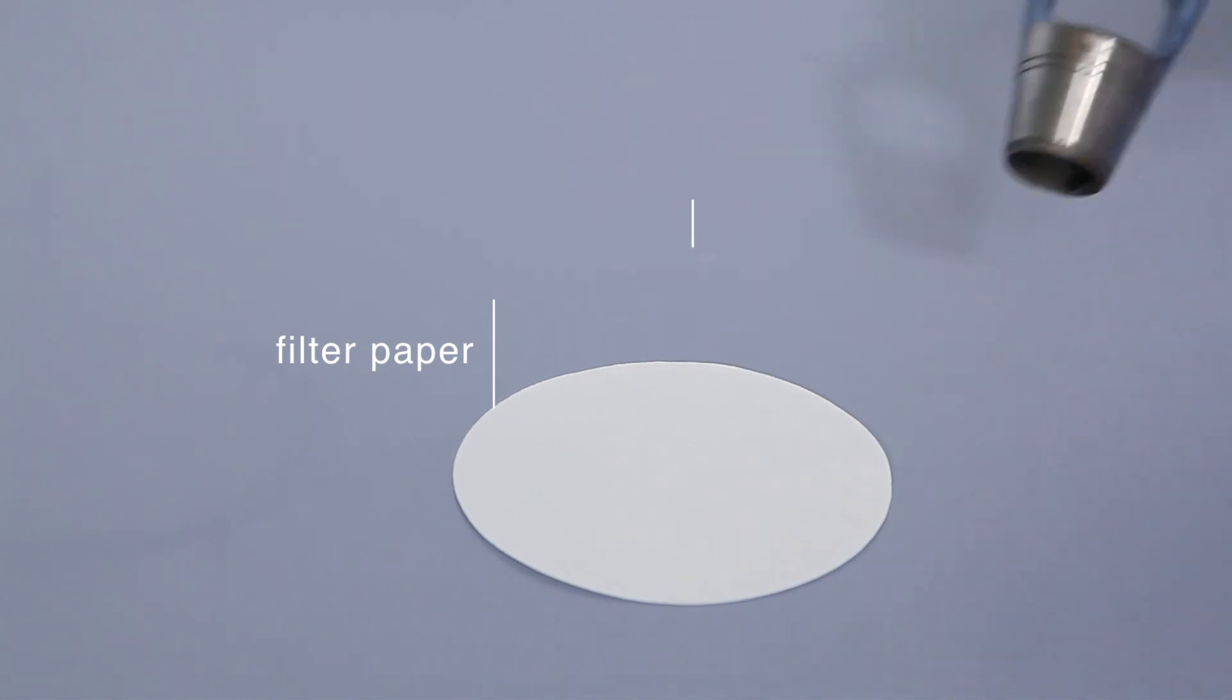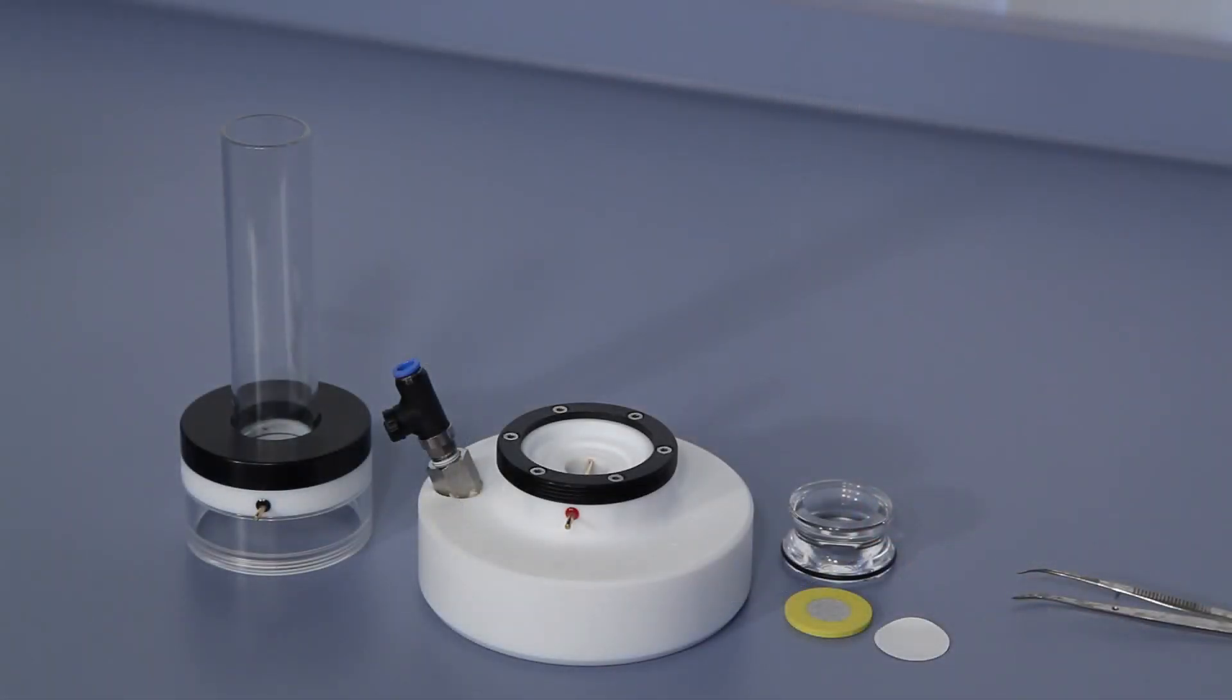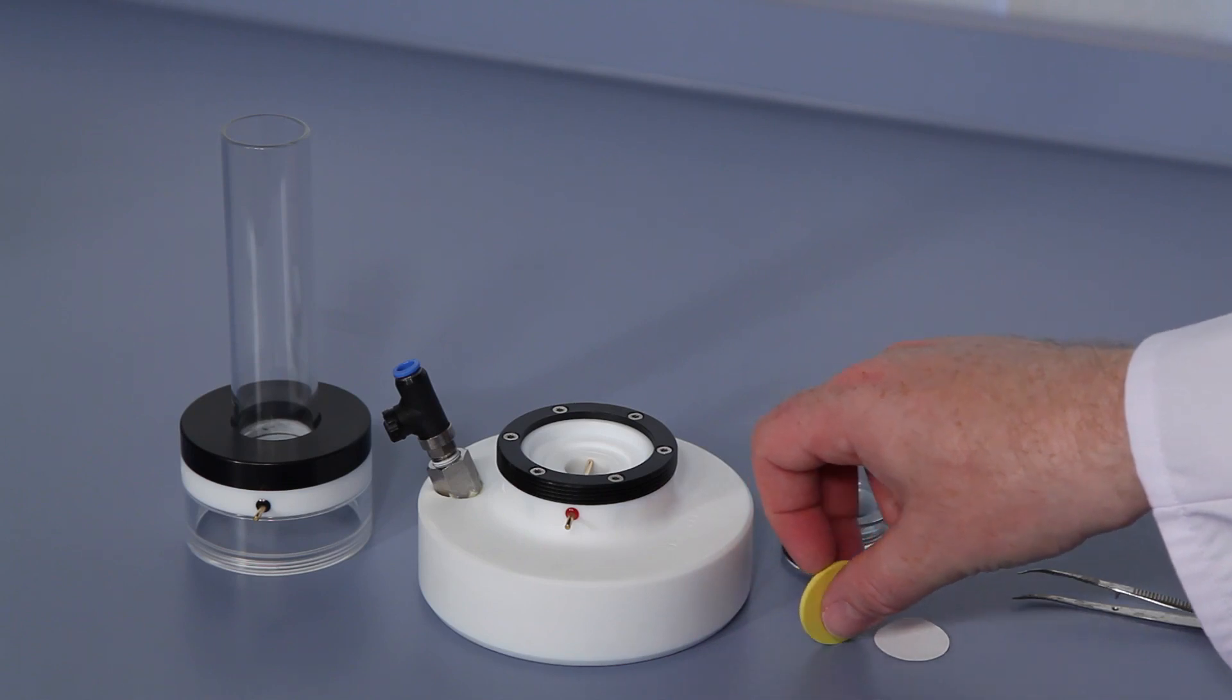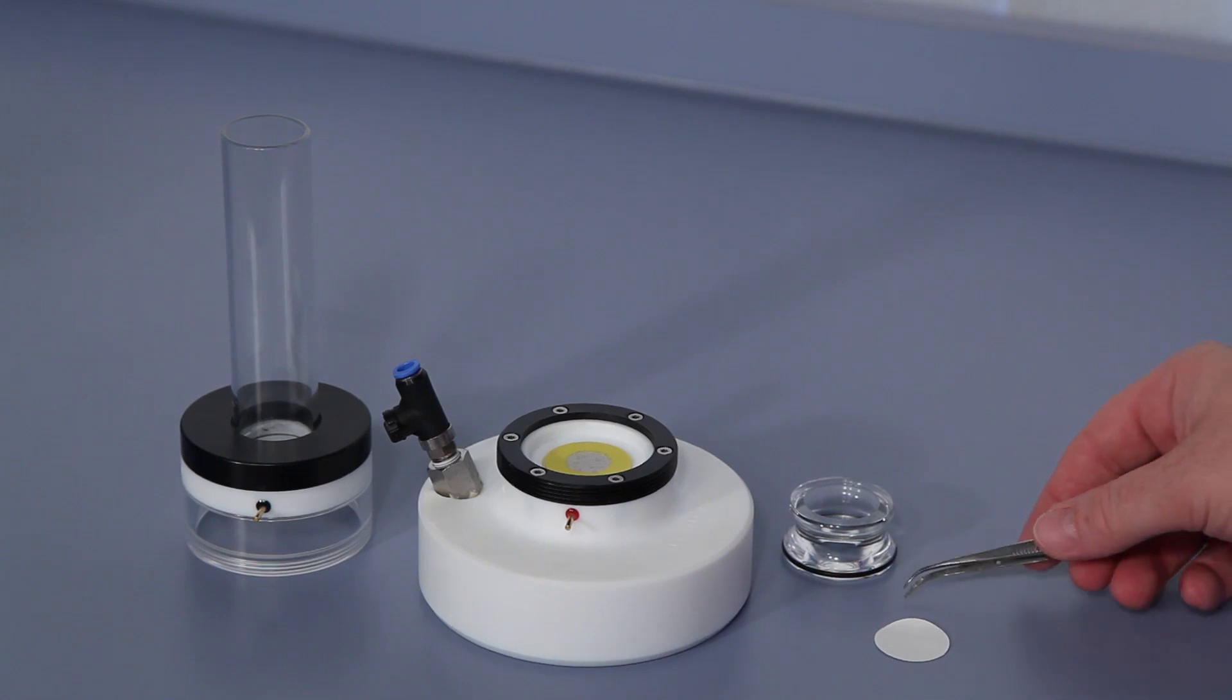Use the supplied punch to cut out a paper filter. Then, insert the yellow screen in the measuring cell with the flat side upwards, and place the filter paper on the screen.